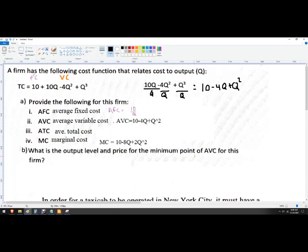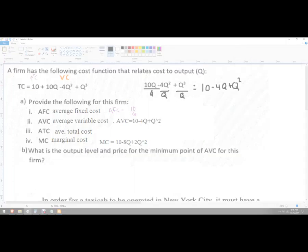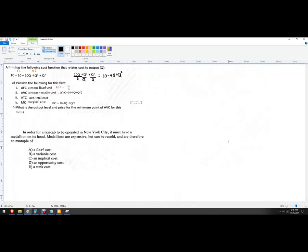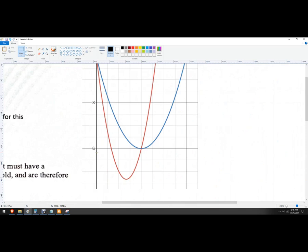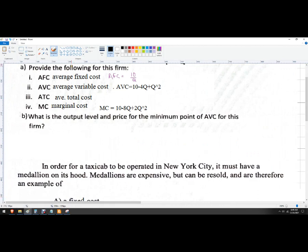What is the output level and price for the minimum point of average variable cost for this firm? So on another screen, what I did was I graphed both of these functions. So the red line, that's our marginal cost. And then here's our average variable cost. So what this shows you is the relationship is that when marginal cost is below average variable cost, average variable cost is falling. Eventually, they will equal as marginal cost starts to rise, and average variable cost will then be pulled up once marginal cost is higher.